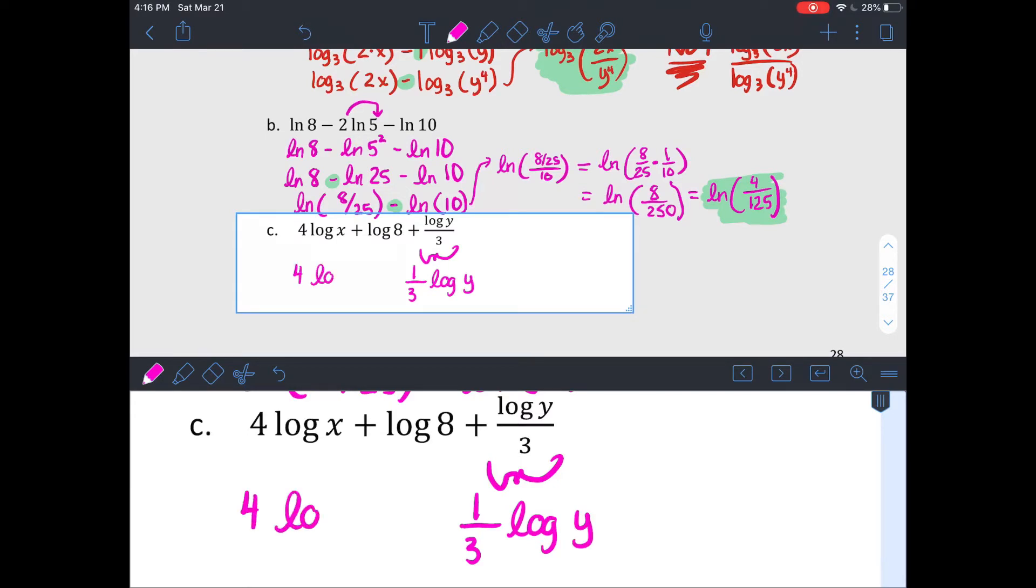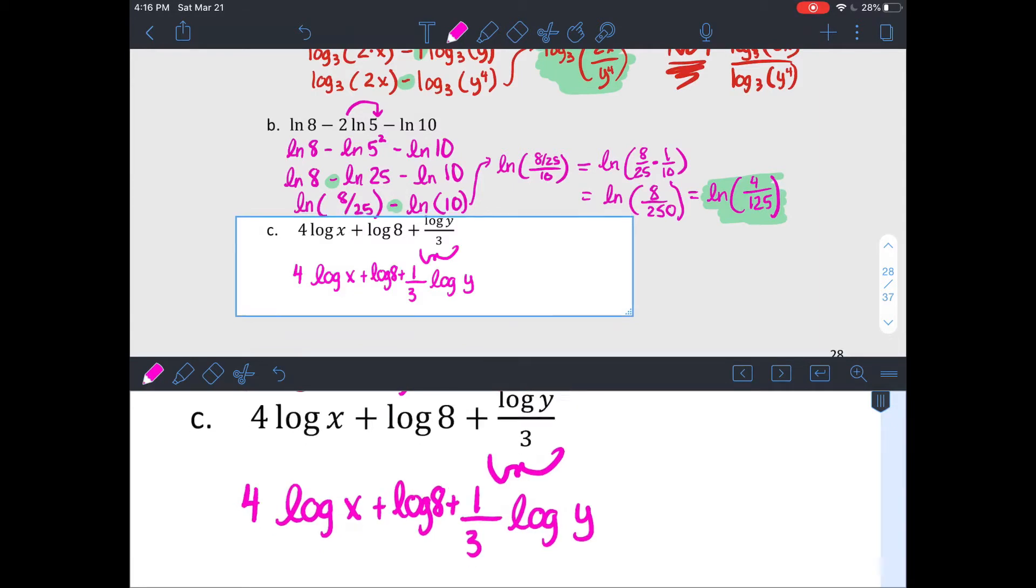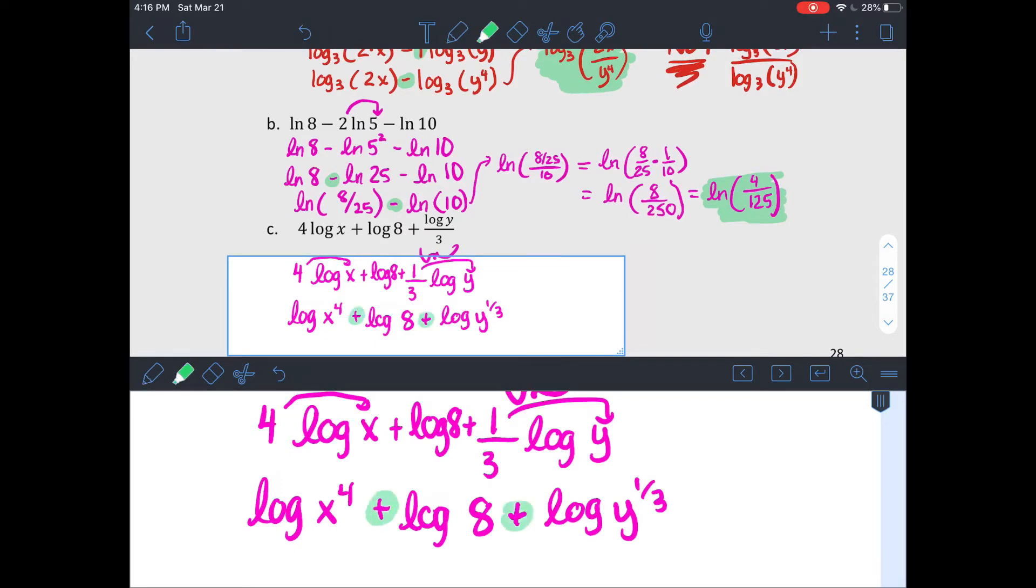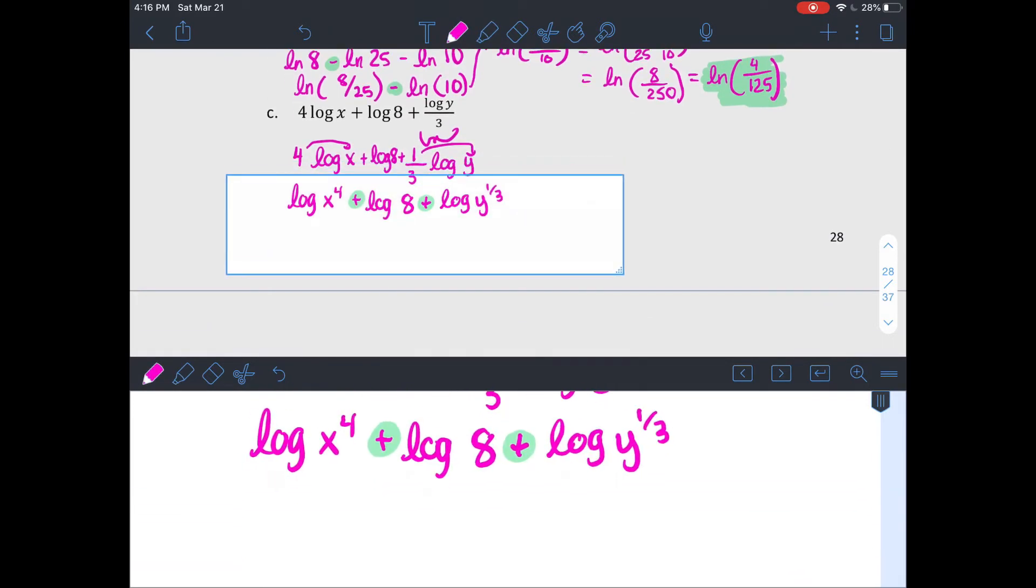I'm going to make this just written a little differently to start with and write that as a 1 third log of y instead of over 3. Then exponents back inside. Log of x to the 4th plus log of 8 plus log of y to the 1 third power. They're all being added together. So if I condense it back, I'm just going to do it all at once and make it into all three of those terms being multiplied inside. You could also write that as the cube root of y.